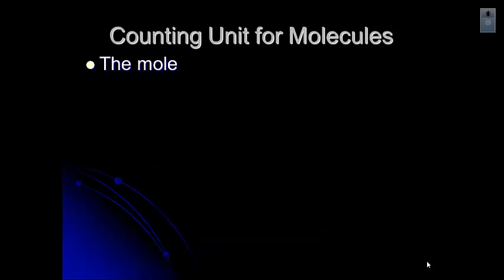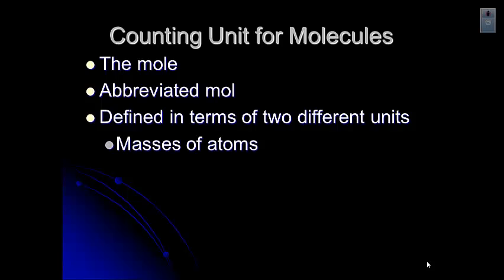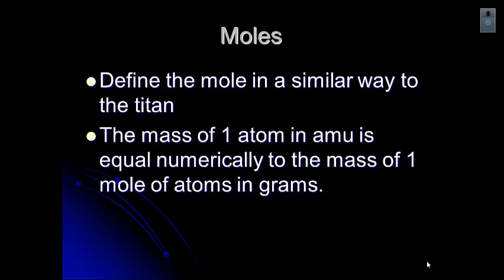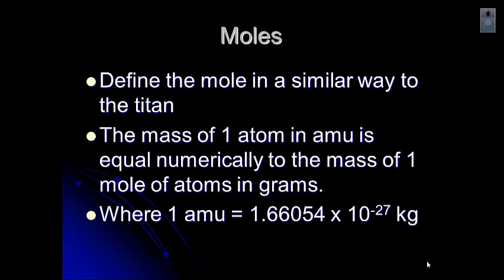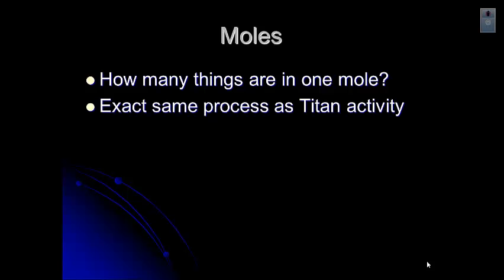And so we've developed this counting unit for molecules called the mole. It's abbreviated MOL. I know, not the most helpful thing, but it still works. And we define it in terms of two different units. We define the mass of atoms in terms of AMU, atomic mass units, and we also define it in the masses of things that are convenient to measure, such as grams. So let's define the mole in a similar way to the Titan. We know that the mass of one atom in AMU is equal numerically to the mass of one mole of atoms in grams. And we know that one AMU has a mass of 1.66054 times 10 to the negative 27 kilograms.